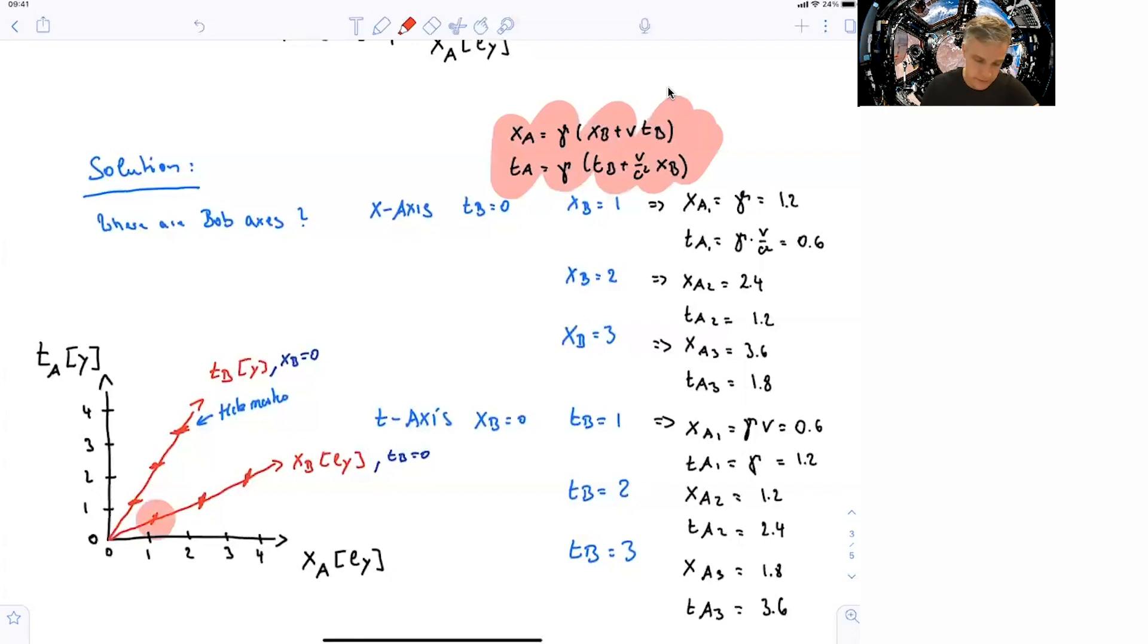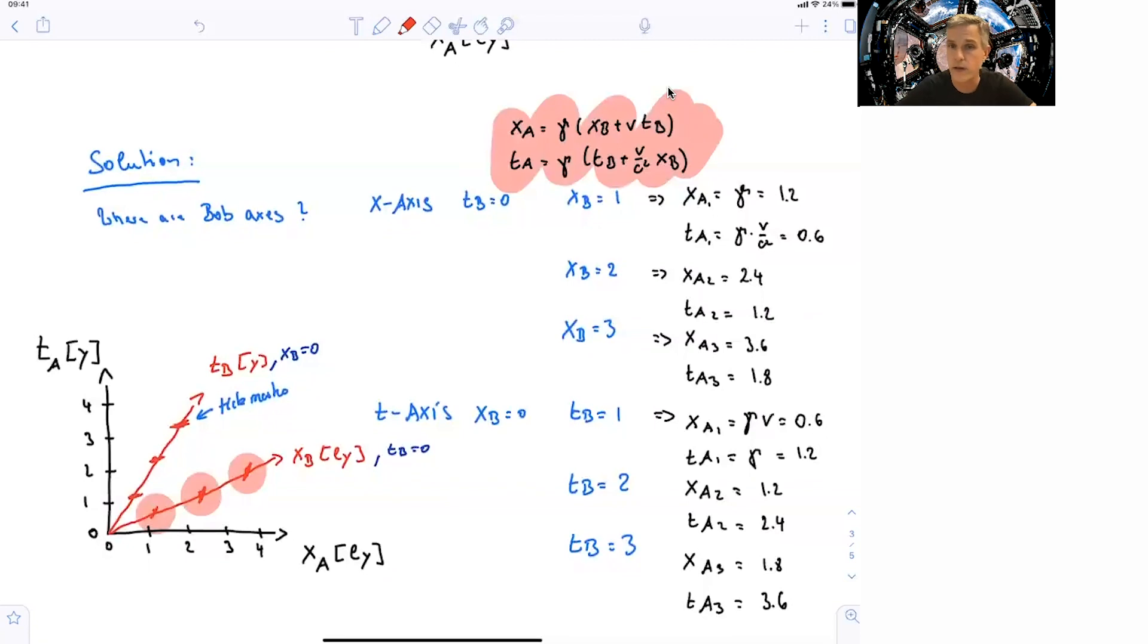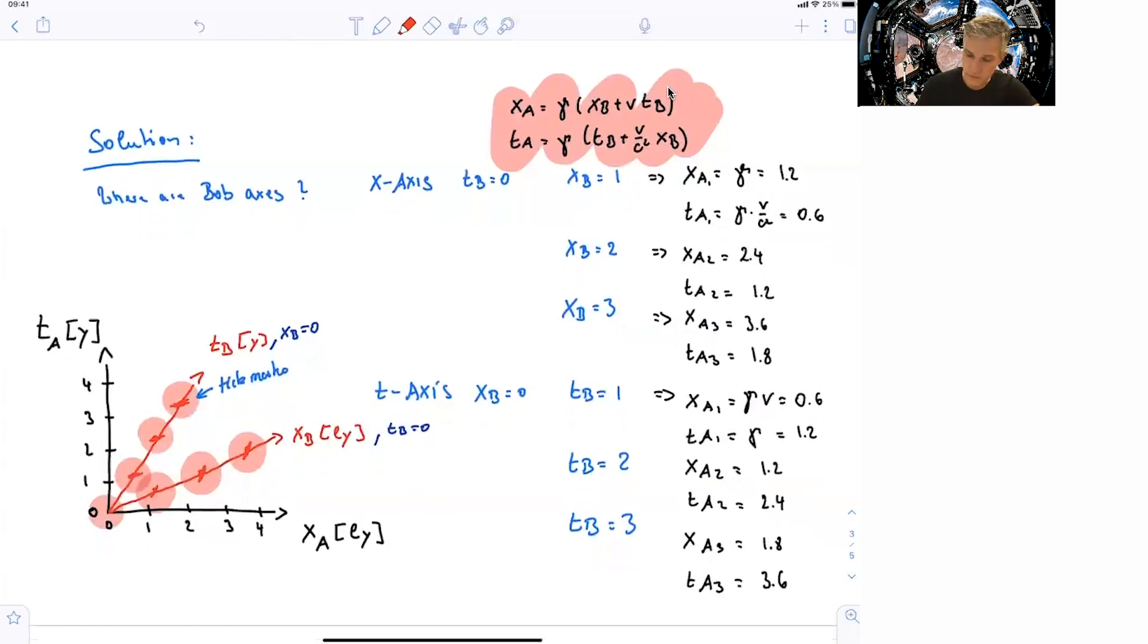OK, and then we move around and find the second point and the third point, and we do the same for the time axis, where xb is equal 0, and tb equal 1, then corresponds to 0.6 in xa1, and 1.2 in xa2. So we find these points here. I failed to say that the origin of those two space-time diagrams coincides.